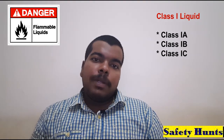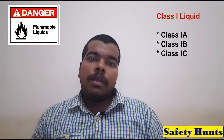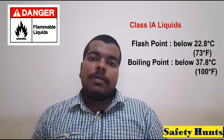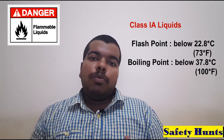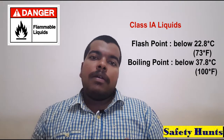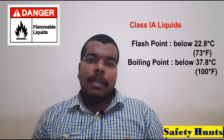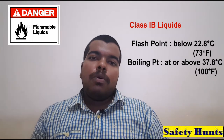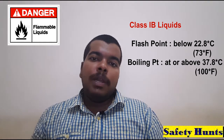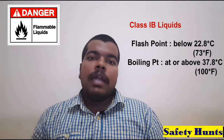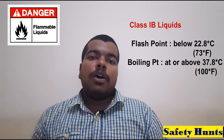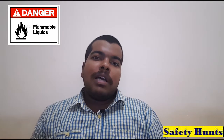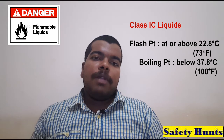Class 1 liquids can be further subdivided into Class 1A, 1B, and 1C. Class 1A liquids have a flash point below 22.8 degrees Celsius and a boiling point below 37.8 degrees Celsius. Class 1B liquids are those having a flash point below 22.8 degrees Celsius and a boiling point at or above 37.8 degrees Celsius.